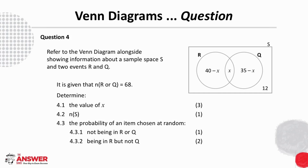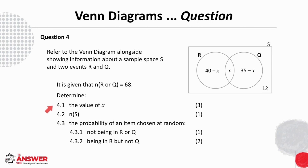Now for a question where the Venn diagram is provided. Question 4 asks us to refer to the Venn diagram alongside. It is given that the number of elements in R or Q is 68, and we are asked to determine the value of X, the number of elements in the sample space, and then two probabilities.